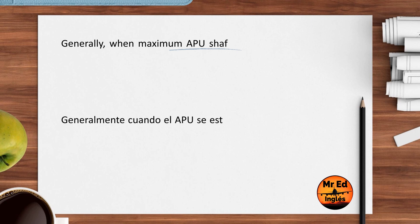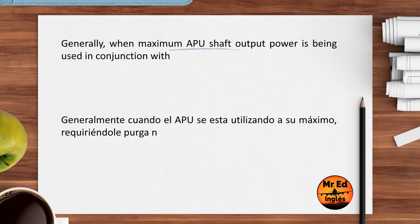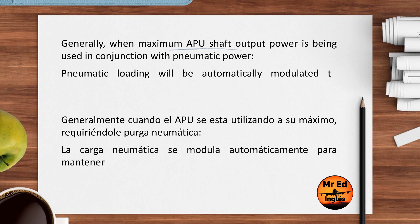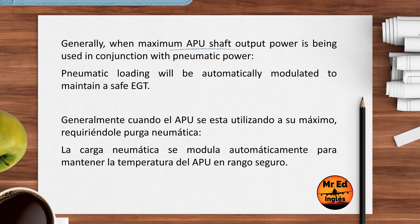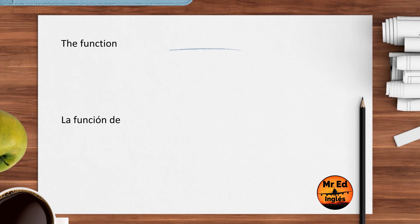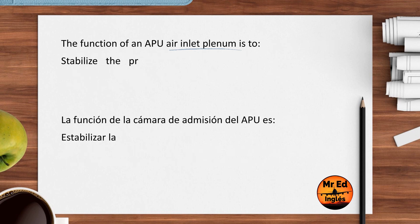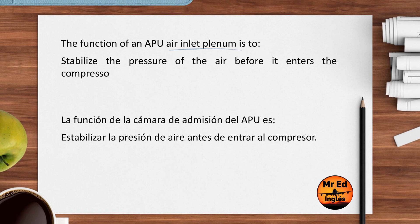Generally, when maximum APU shaft output power is being used in conjunction with pneumatic power, pneumatic loading will be automatically modulated to maintain a safe EGT. The function of an APU air inlet plenum is to stabilize the pressure of the air before it enters the compressor.